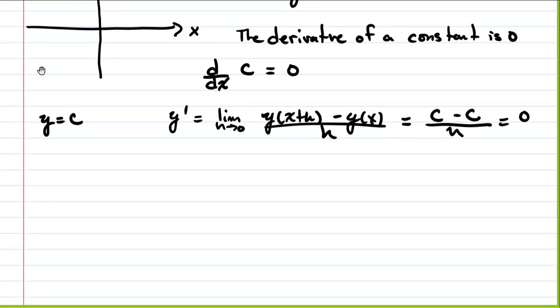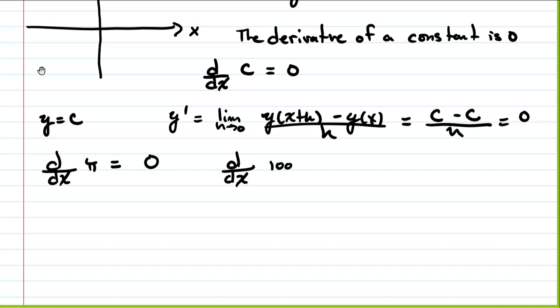For quick examples: what is d/dx of pi? Pi is a constant, so its derivative is zero. And d/dx of 1 million? One million is a constant, so its derivative is also zero. No matter what the constant is, the derivative will always be zero.